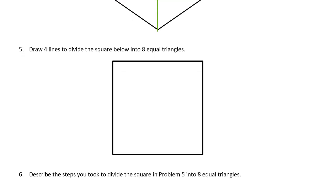And now four lines to divide the square below into eight equal triangles. So it'll take two lines to make four triangles.